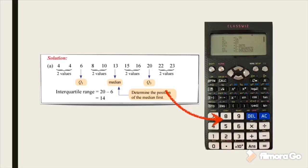So this is Question A. Q1 is 6, Q3 is 20, so the interquartile range is 20 minus 6, which is 14, and the median is 13. Later you can see how I use the calculator to get the right answer.